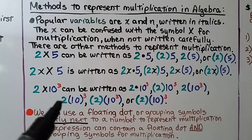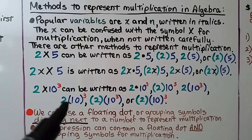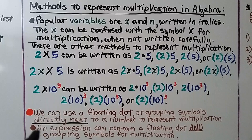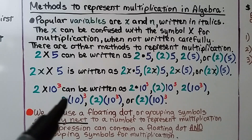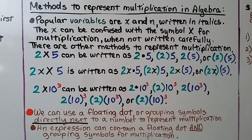We can use a floating dot or grouping symbols directly next to a number to represent multiplication. If you see a 2 with a minus sign between it and a grouping symbol, that doesn't count — there's a minus sign in between them. The number has to be directly next to the grouping symbol, whether it's parentheses, brackets, or braces. An expression can contain both a floating dot and grouping symbols to represent multiplication.